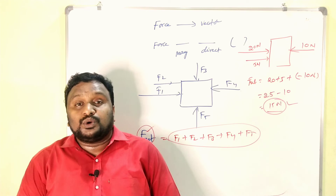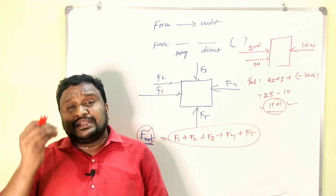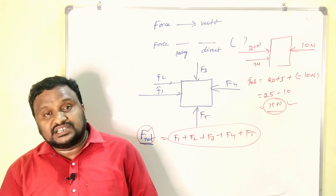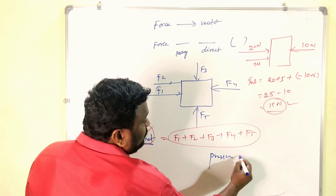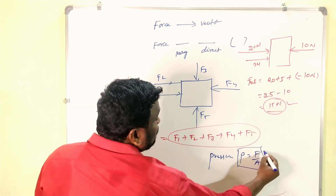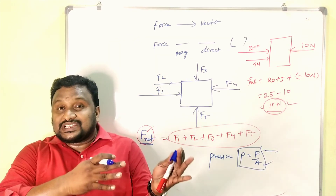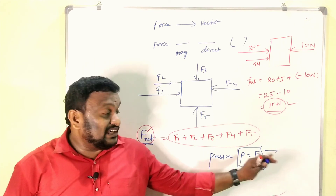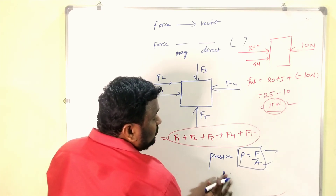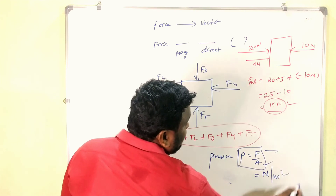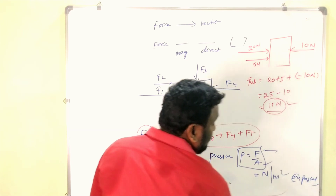When a certain amount of force acts on a particular area, that is called pressure. P = F/A — force acting on a particular area is pressure. The unit of pressure is Newton per meter square, also called Pascal. The force can create pressure when we consider a particular area.